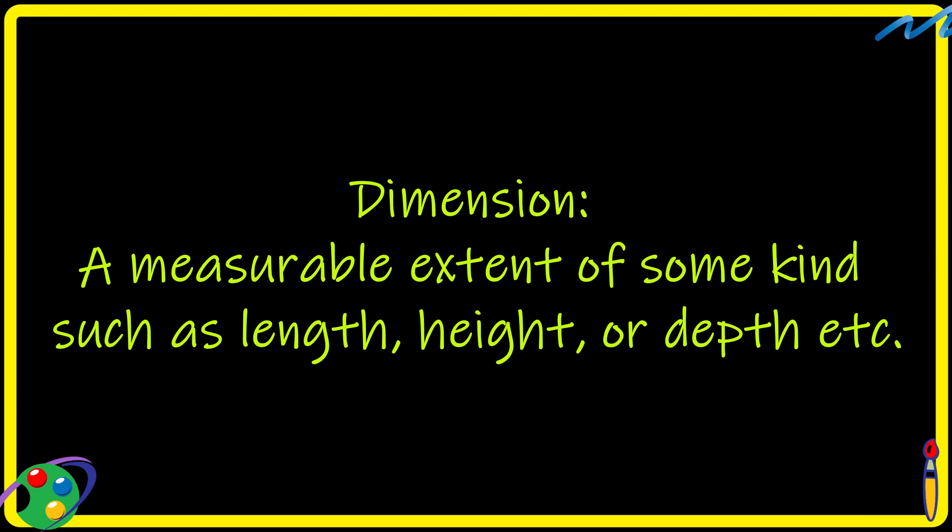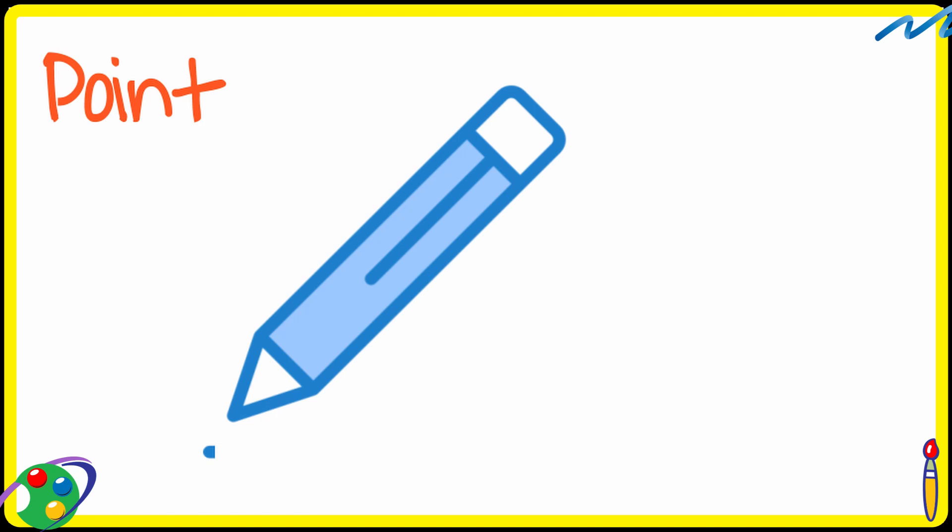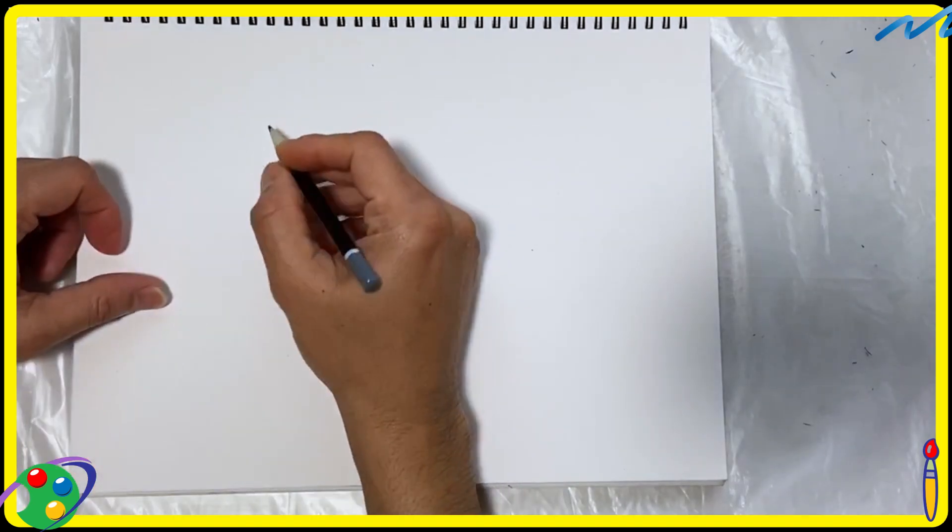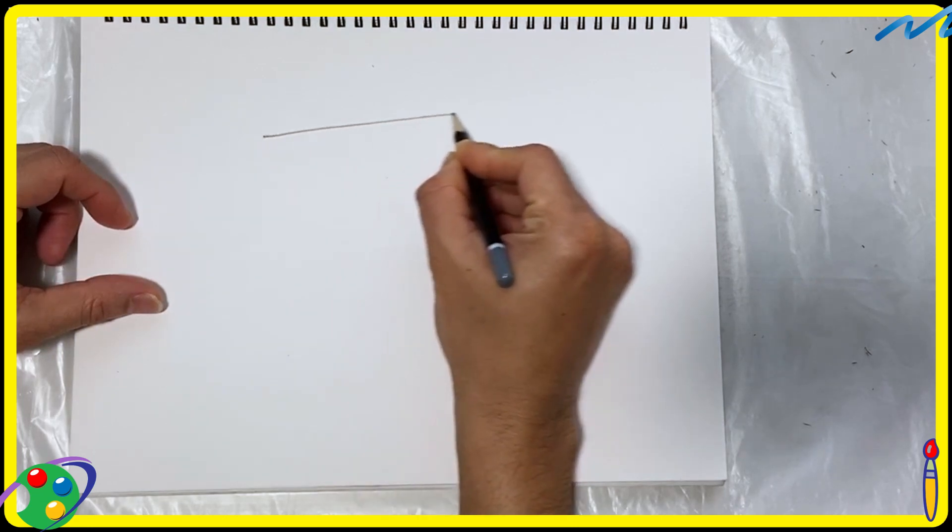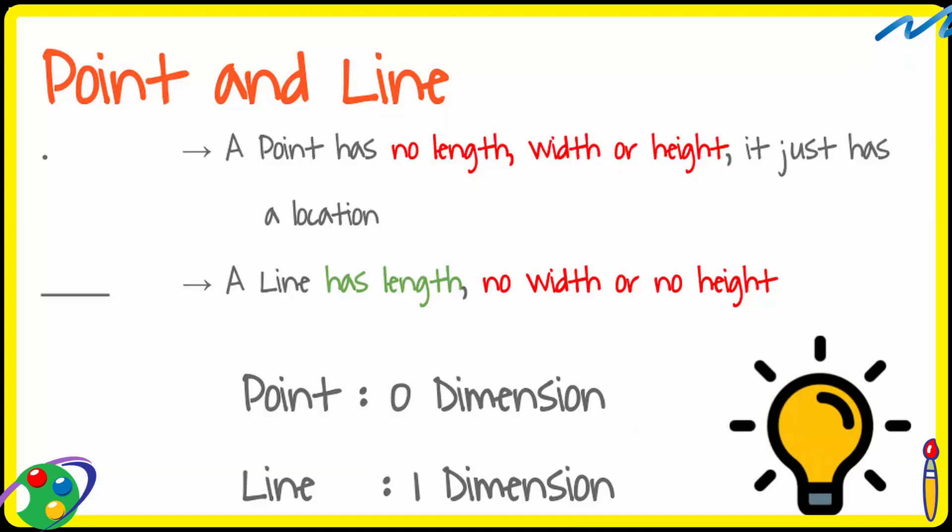So again coming back to point. Yes, it has no height, no width, and no length. So it has no dimension. Now if we extend a point from one position to another position we get a line. So the line has length, but it does not have a width or height. So it has one dimension.